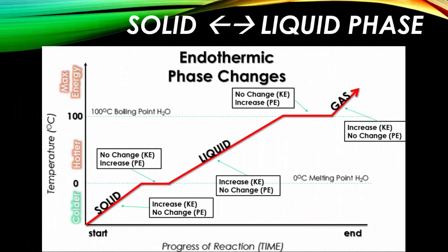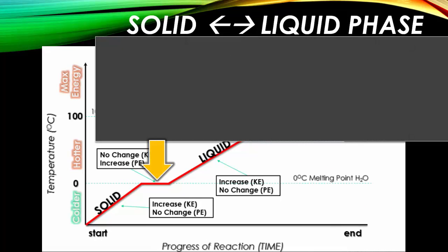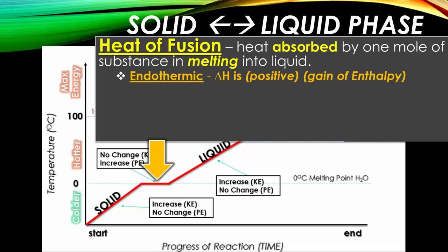Looking at the endothermic graph again — at that solid to liquid phase — we call this the heat of fusion. Heat of fusion is the amount of heat absorbed by one mole of a substance when it is melting into a liquid. The heat of fusion is going to be an endothermic reaction, meaning that delta H, or the change in heat, is going to be positive, because you are going from a solid to a liquid, absorbing heat and gaining enthalpy.